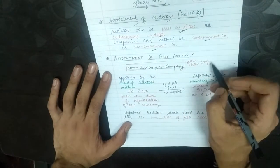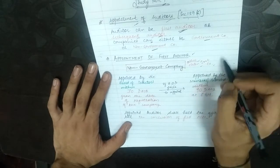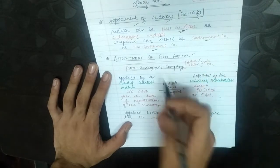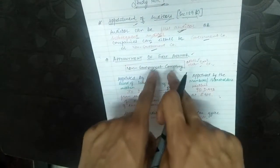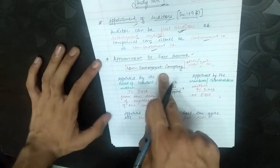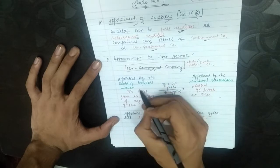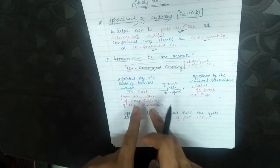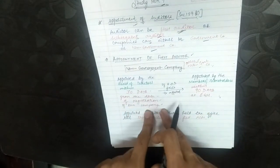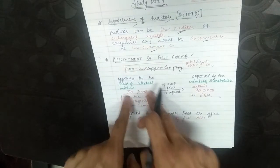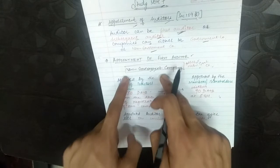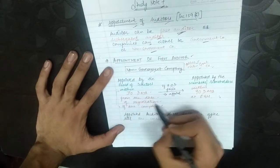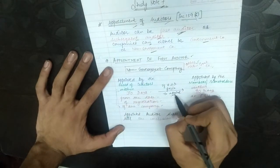A non-government company is a company which is other than a government company — that is the definition given in the law. The rules to appoint the first auditor in a non-government company: first, appointed by the Board of Directors within 30 days from the date of registration of the company.